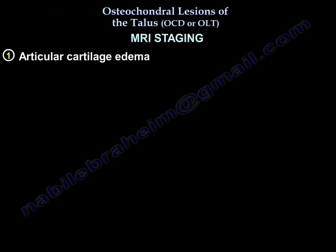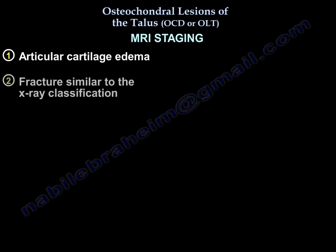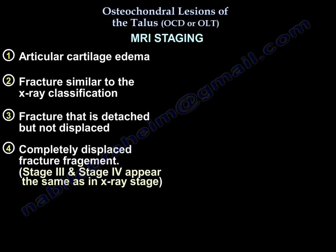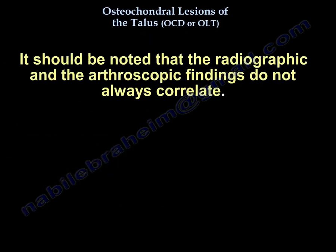On MRI, Stage 1 shows articular cartilage edema, corresponding to the small area of subchondral compression on x-ray. Stage 2 shows a fracture similar to the x-ray classification. Stage 3 shows a fracture that is detached but not displaced. Stage 4 shows a completely displaced fragment — Stages 3 and 4 are essentially the same as the x-ray classification. MRI also has a Stage 5, which is subchondral cyst formation. It is noted that radiographic and arthroscopic findings do not always correlate.